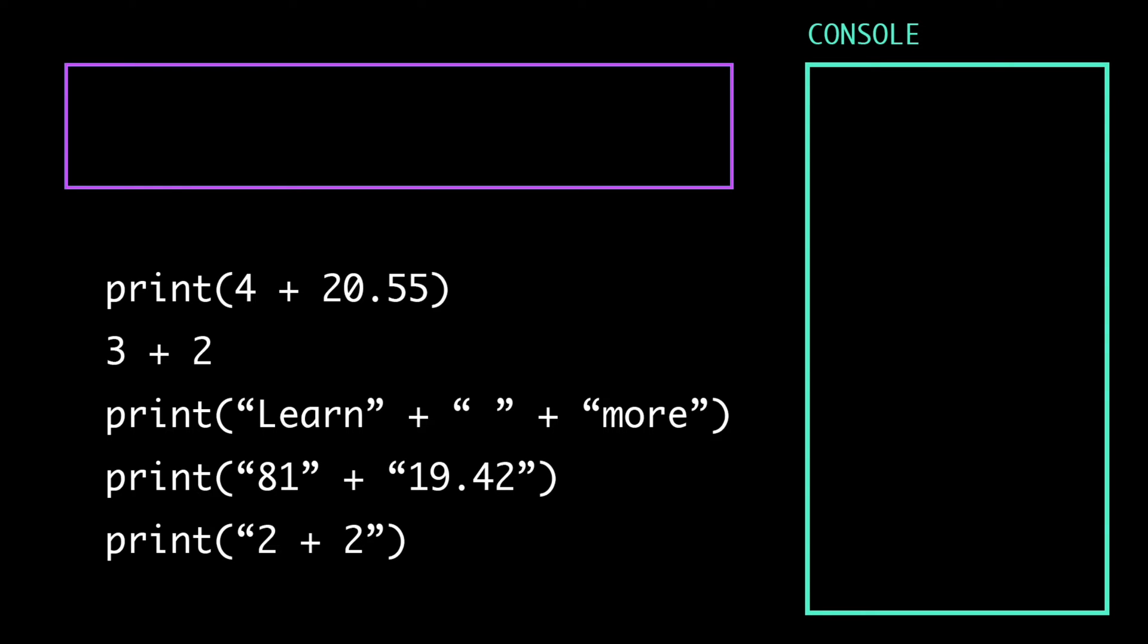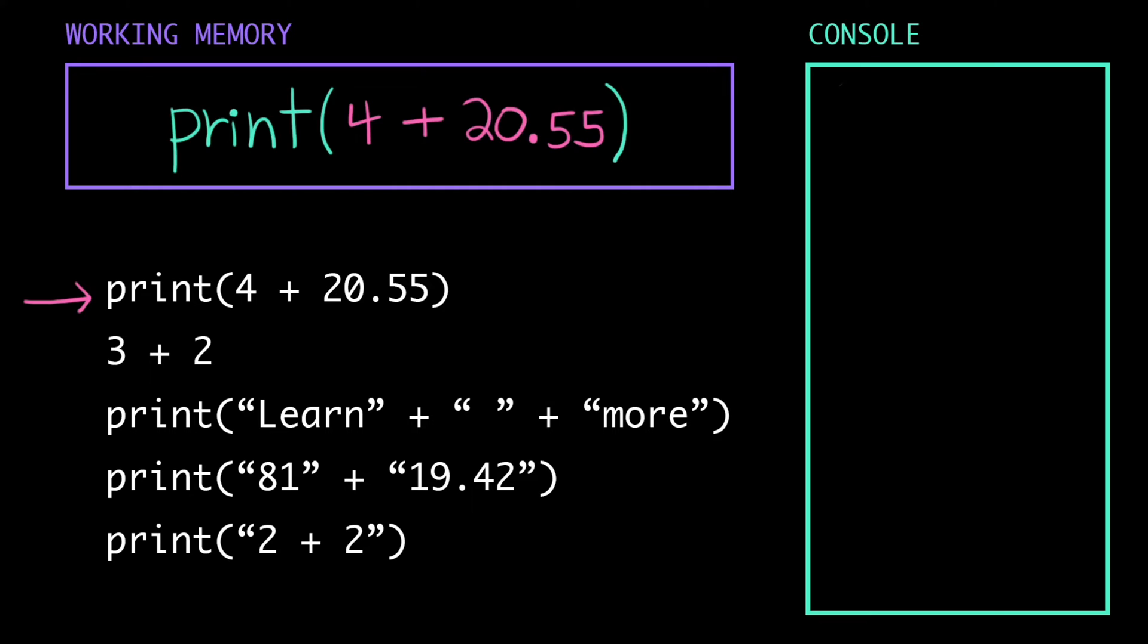Let's see that in action by tracing this program. The computer takes the first line of the program and loads that into working memory. Then the first thing it's going to do is look for any expressions to evaluate. Remember that evaluating an expression just simplifies it down to a single value. Here we have the expression, the integer 4 plus the float 20.55, and that evaluates to the float 24.55.